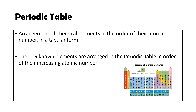The 115 known elements are arranged in the periodic table in the order of their increasing atomic number and show the trends of their properties. The periodic table can be used to derive the relationship between the properties of elements, predict the properties of new elements yet to be discovered, and provides a useful framework for analyzing chemical behavior. The modern periodic table has 18 vertical columns called groups and seven horizontal rows called periods.